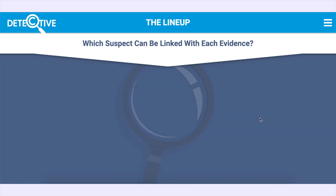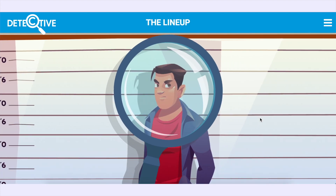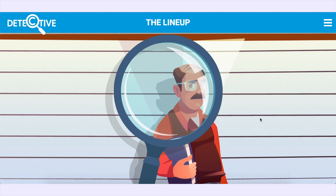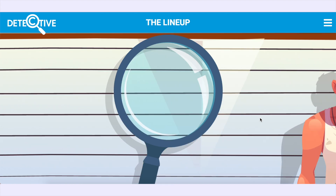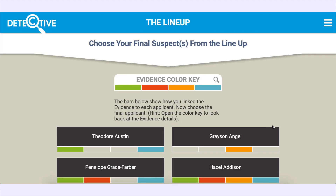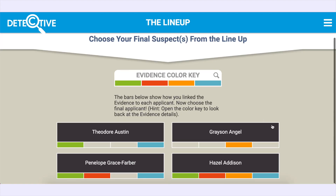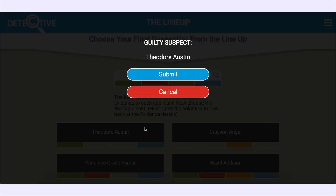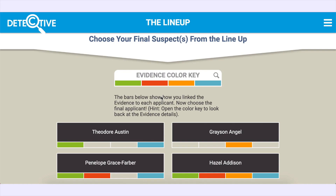Step five, the lineup and deductive stats: choose your final suspect from the lineup given the matches you made previously in the deduction. During the lineup you'll be able to refresh your memory on the pieces of evidence using the color key.